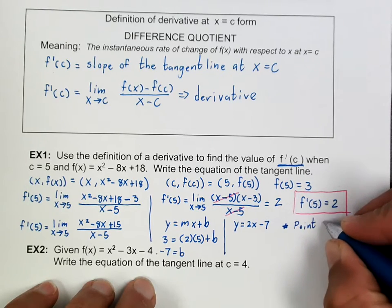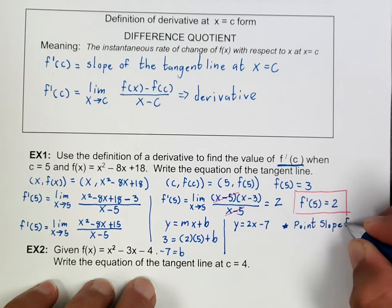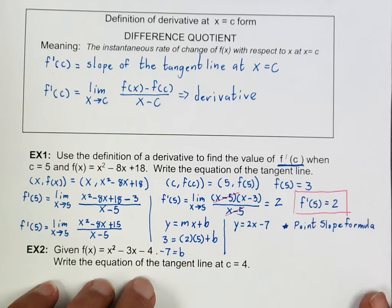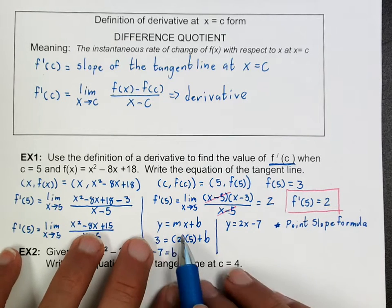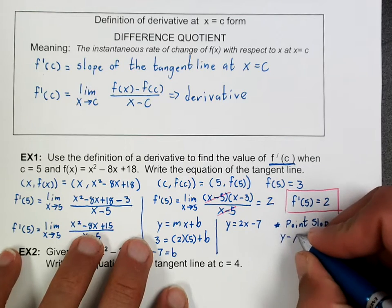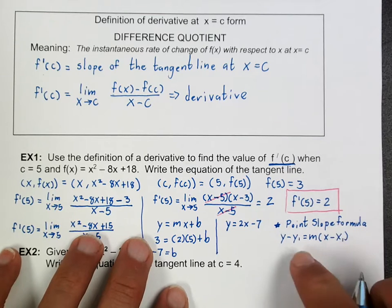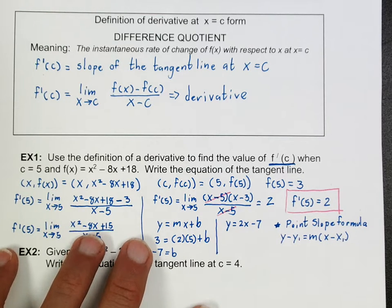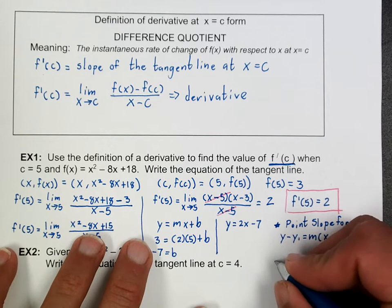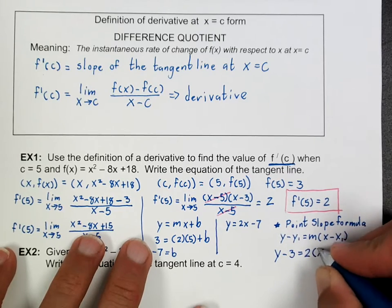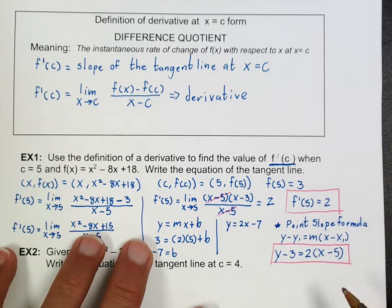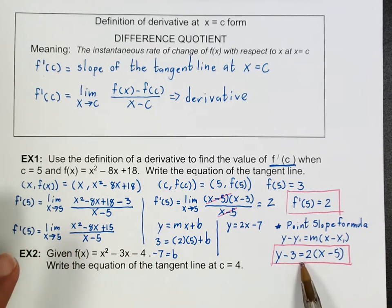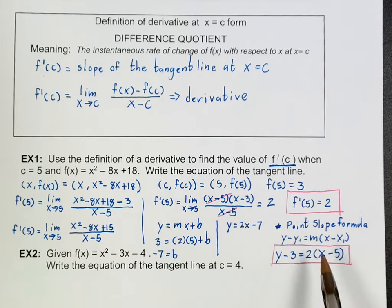The point-slope formula is y minus y₁ equals slope times (x minus x₁), where (x₁, y₁) is a point on the graph — in this case (5, 3). So this would be y minus 3 equals 2(x minus 5). On the AP exam, they don't expect you to simplify further than this. If you have multiple choice and none of those forms appear, then you'll need to simplify, which gives y = 2x - 7.